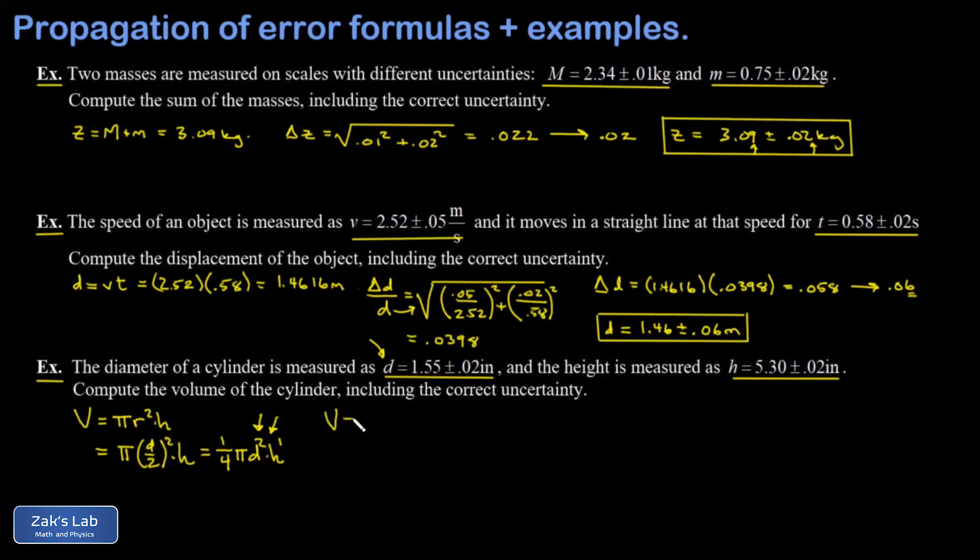So first we're going to find the volume V. And when I run the numbers on that, it comes out to almost exactly 10 cubic inches. I'll just keep several decimal places for now. Then I apply my uncertainty formula.